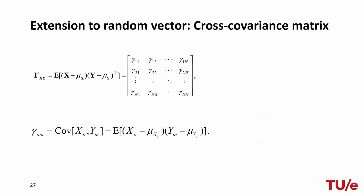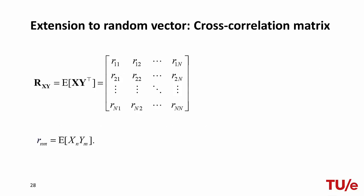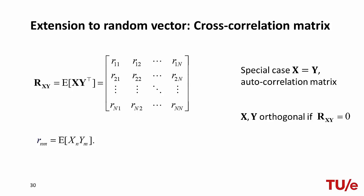Finally, we can extend the concept of covariance to random vectors. In this case, we have a matrix where the value at row n and column m is the covariance between random variable xn and random variable ym. As a result, the covariance matrix is symmetric. A special case is when x equals y, giving the auto-covariance matrix. If the covariance matrix is zero, x and y are uncorrelated. Similarly, we can obtain the cross-correlation matrix where each element is the correlation between xn and ym. When x equals y, this is the autocorrelation matrix, and if the cross-correlation matrix is zero, x and y are said to be orthogonal.